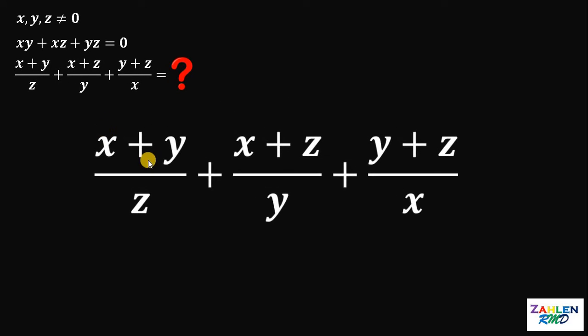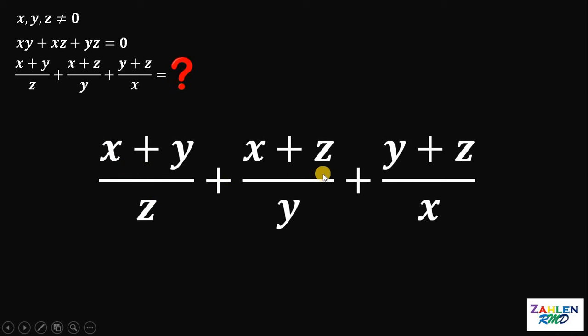Now, what we're going to do is to find the numerical value of x plus y over z plus x plus z over y plus y plus z over x. Given that xy plus xz plus yz is equal to 0. Now, how are we going to find the value of this expression?